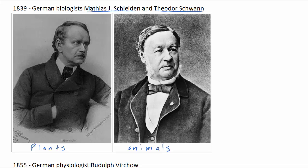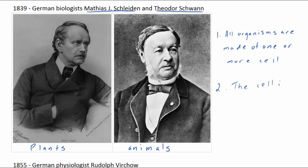Schleiden and Schwann used their observations to formulate the cell theory, which originally had two main components: one, all organisms are made of one or more cells; and two, the cell is the fundamental unit of all life.